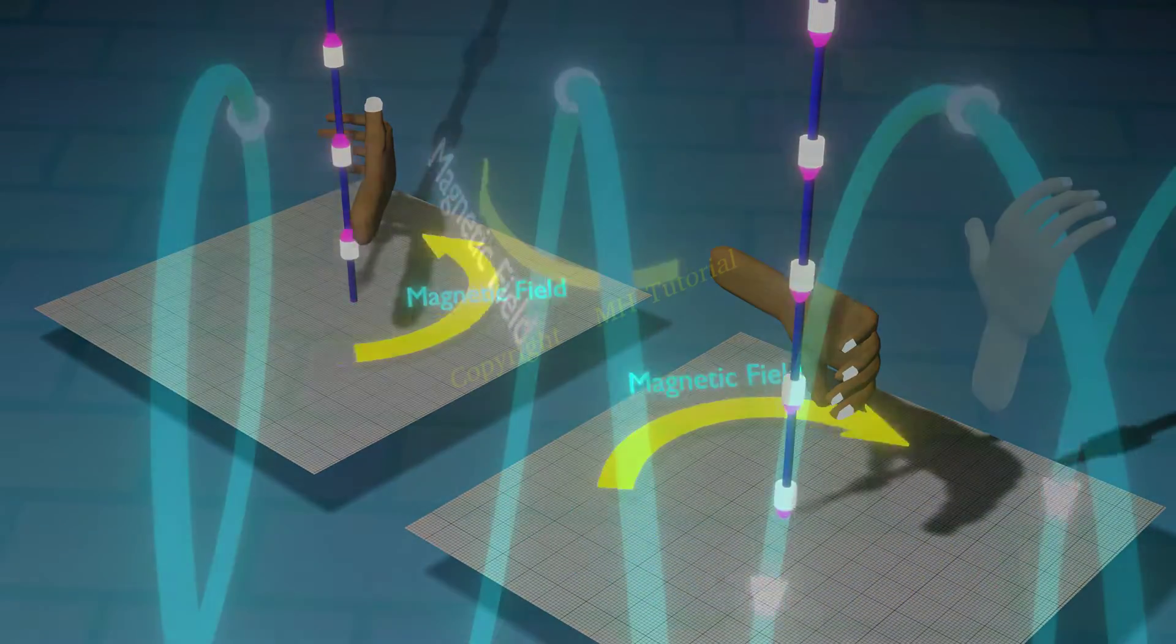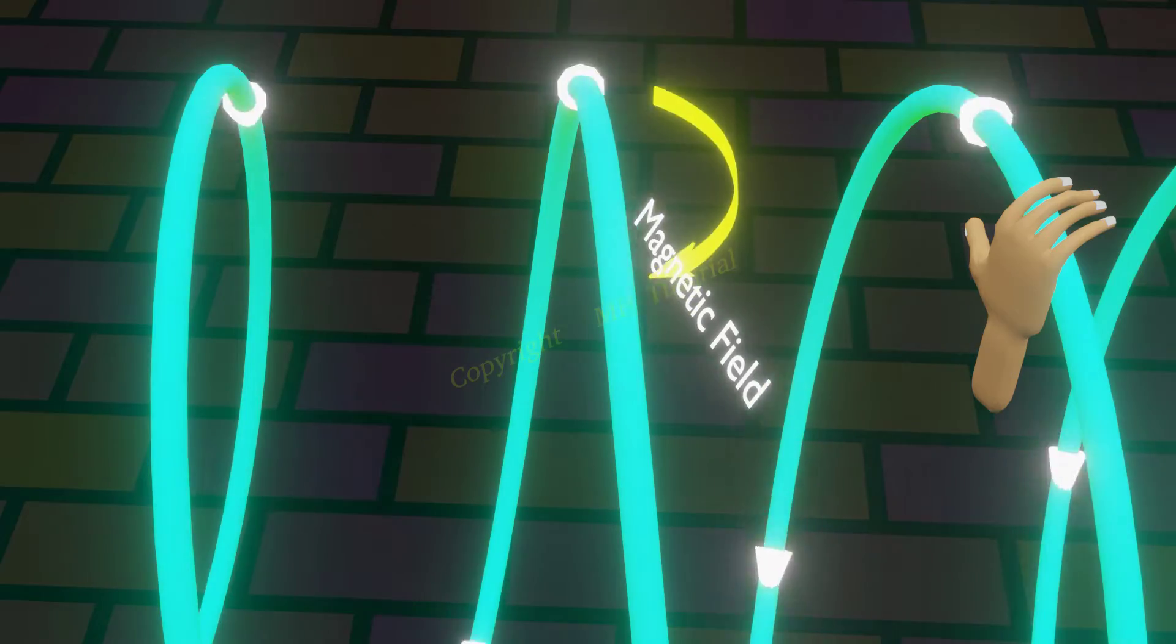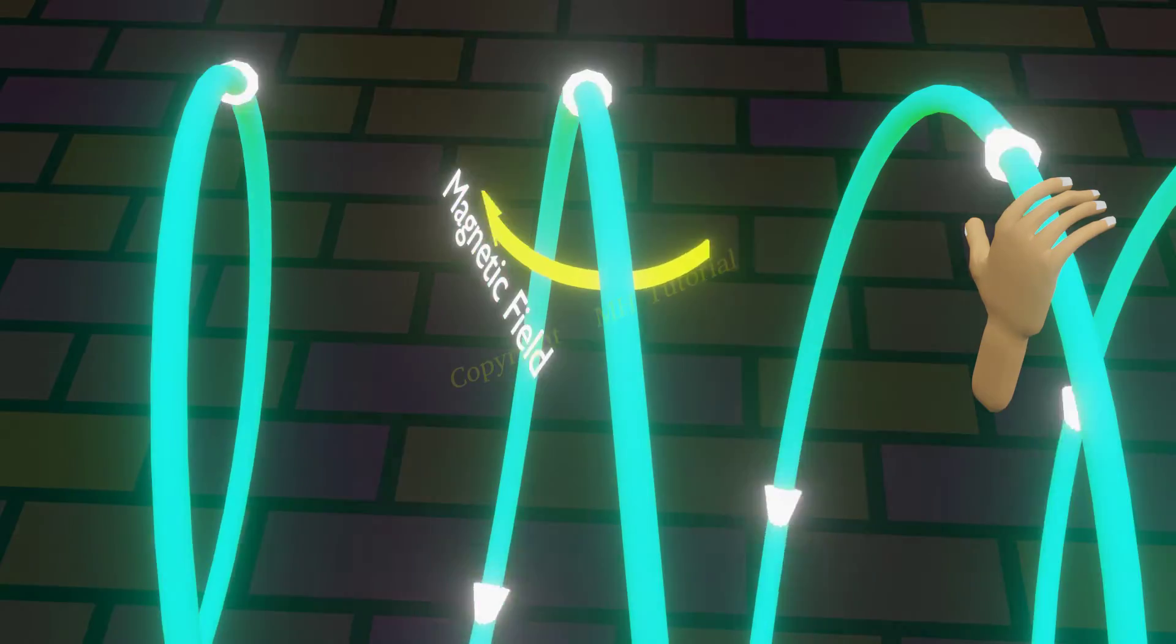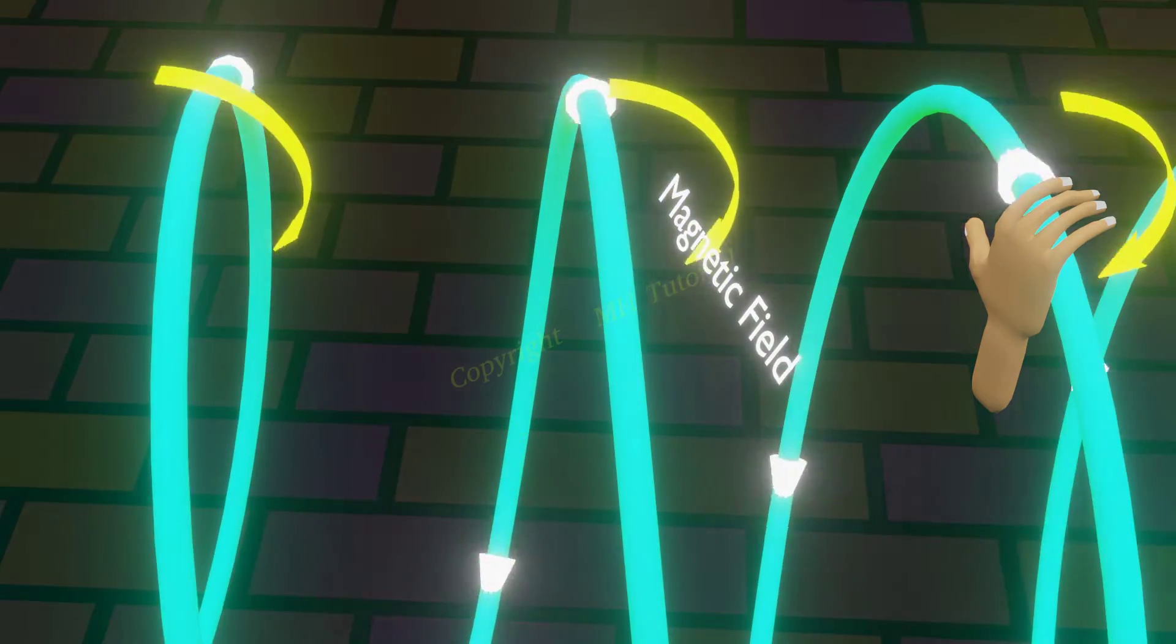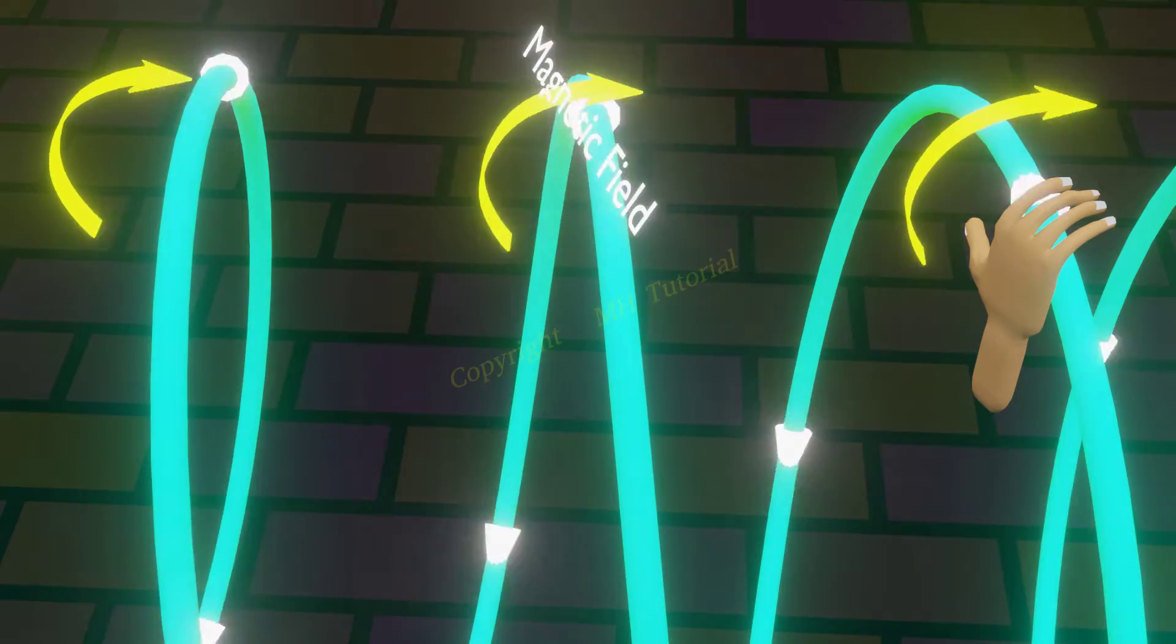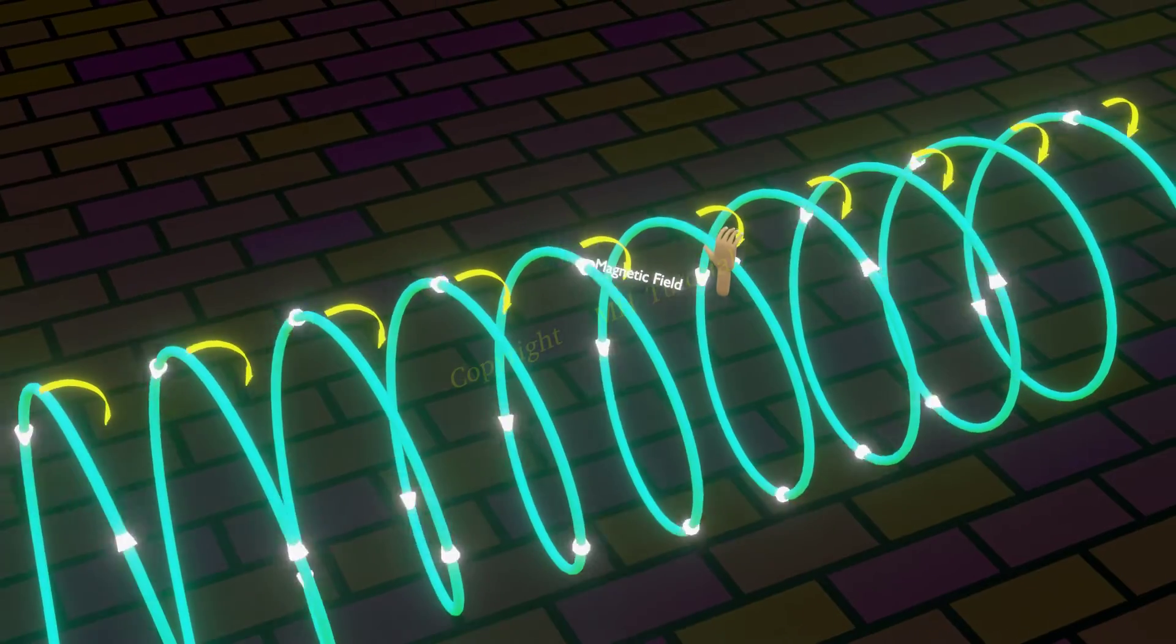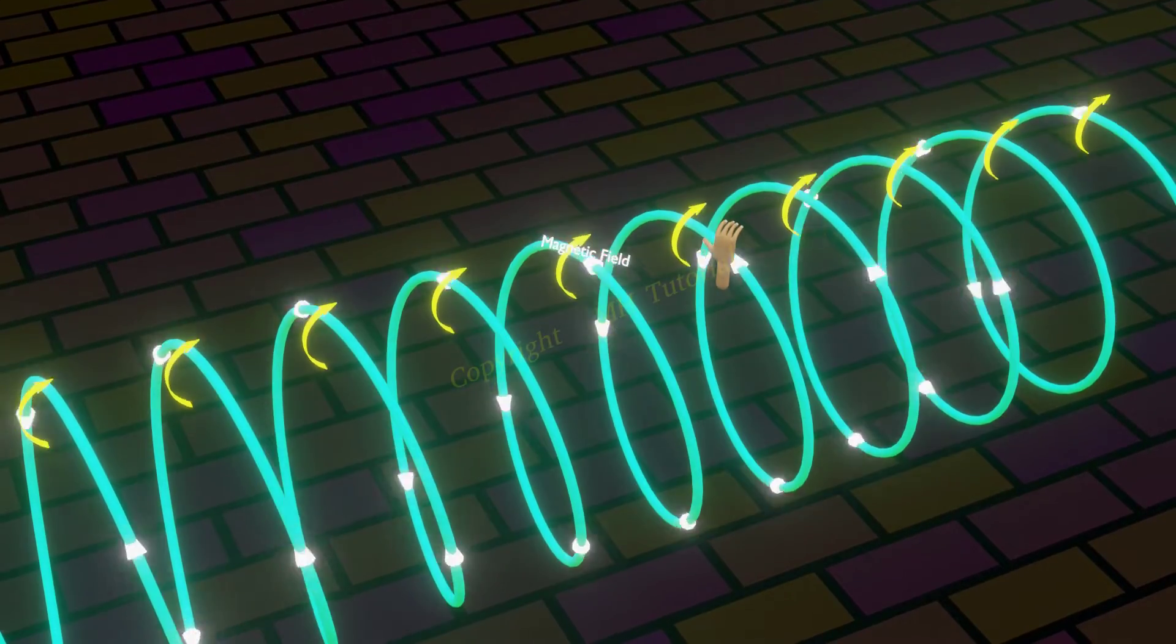Apply this rule in a multi-turn solenoid. These yellow arrows on each turn show the direction of the magnetic field. Summing up all these small effects, we get the total magnetic field around the solenoid.